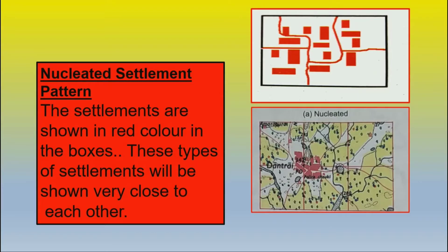The first one is nucleated. You can see the red boxes are settlements, and these red boxes are shown close to each other. You can see one example given in the textbook — the settlement is nucleated because it is the town Dantrai, where the red boxes are shown close to each other. So we can interpret and say that it comes under nucleated settlement pattern.